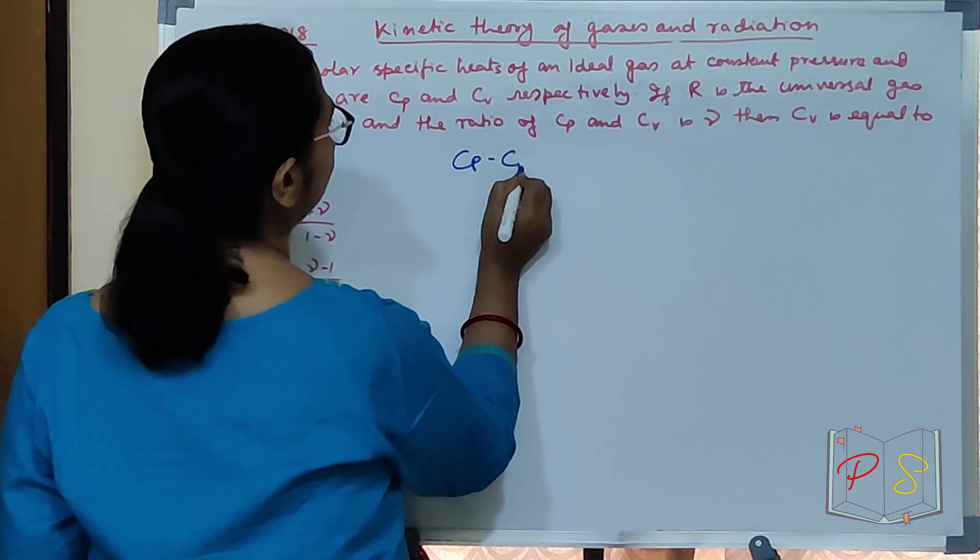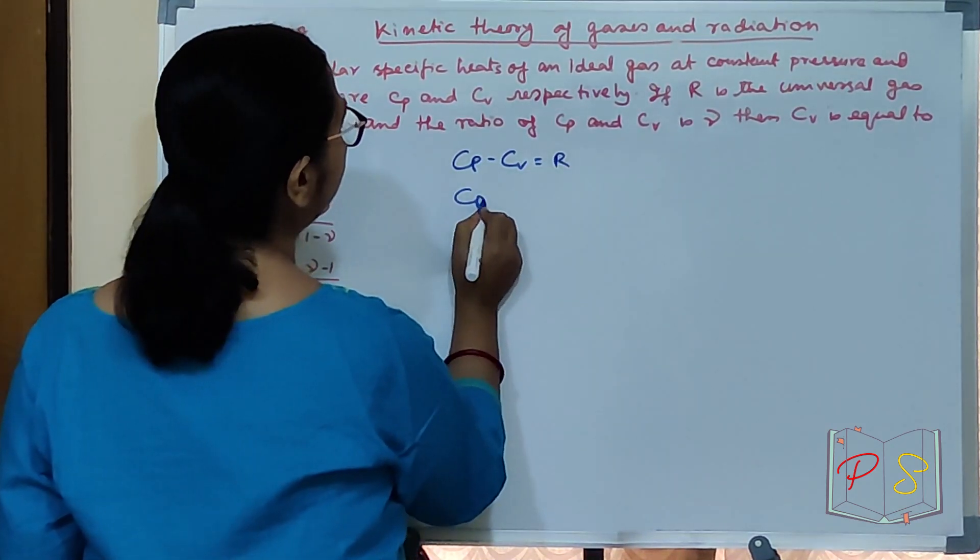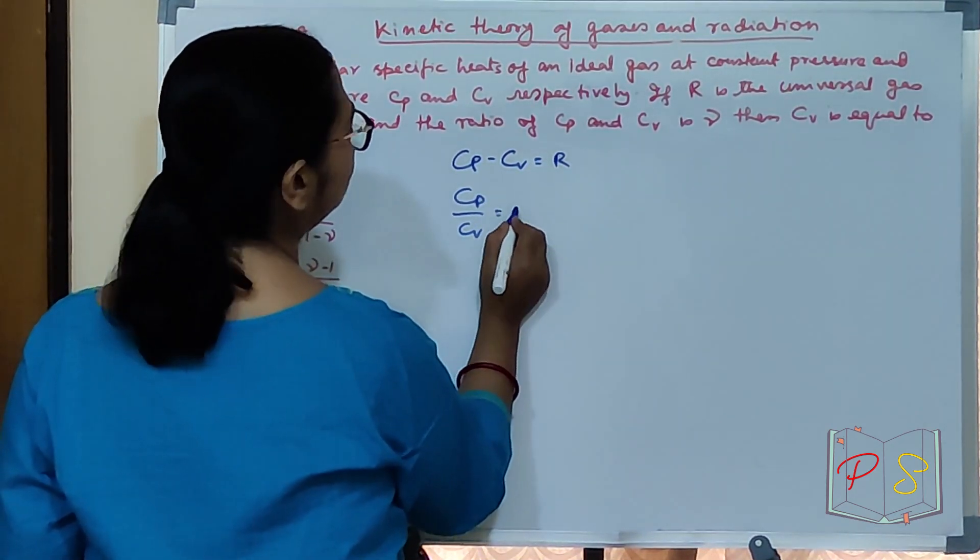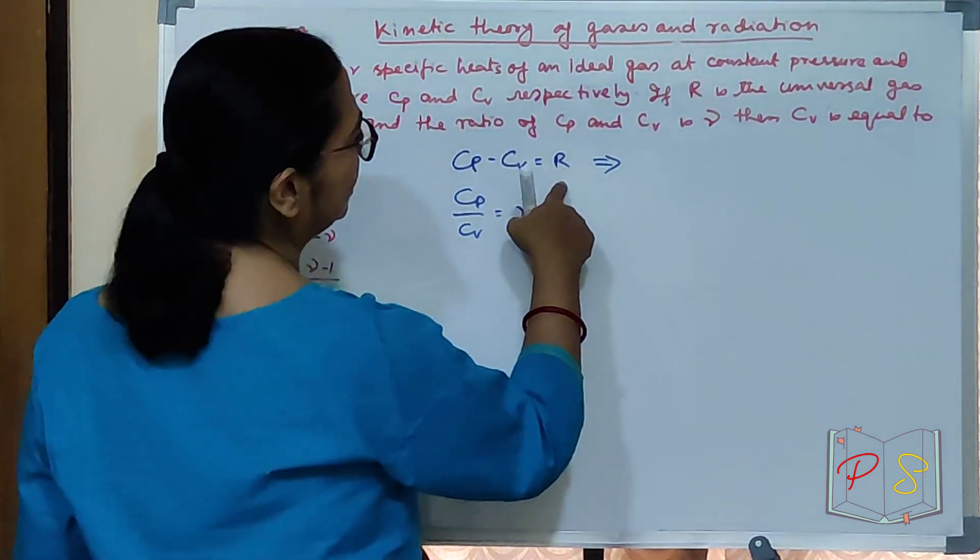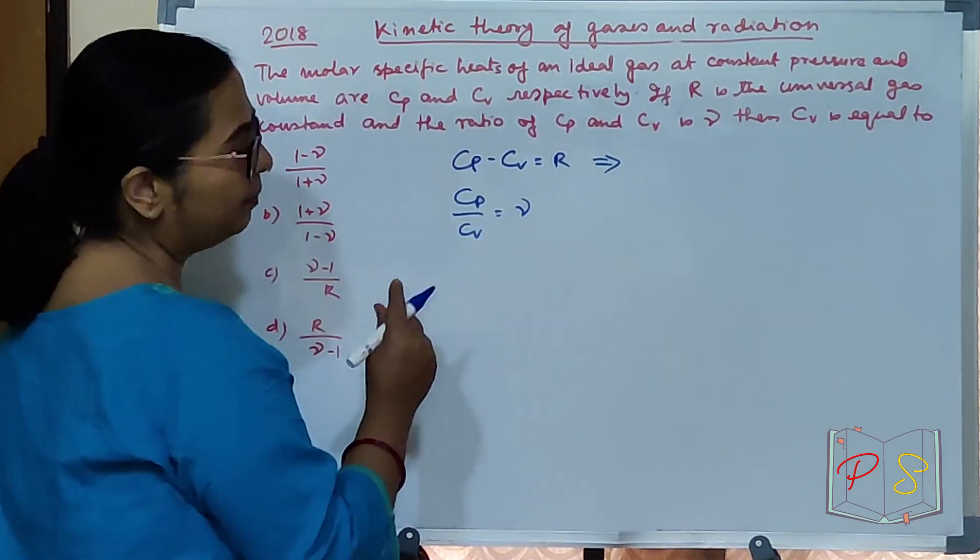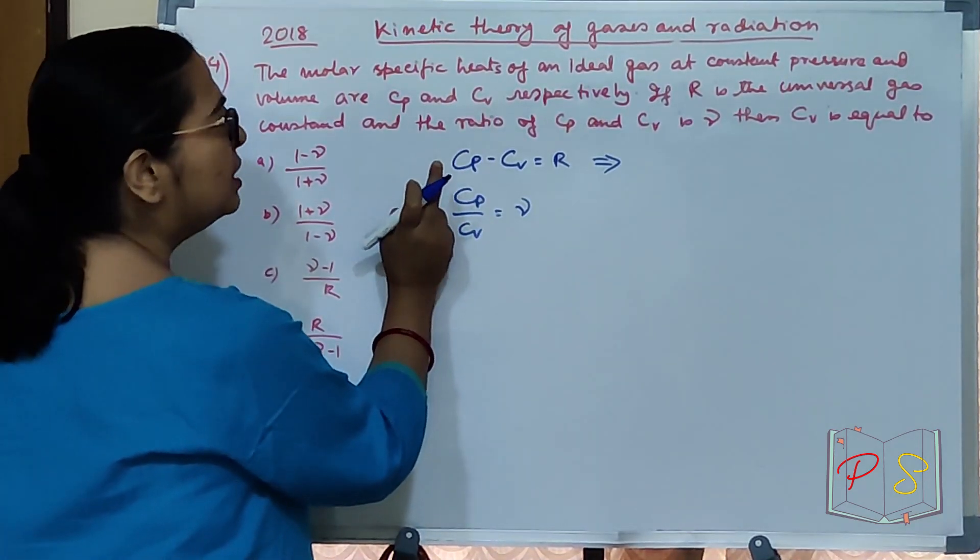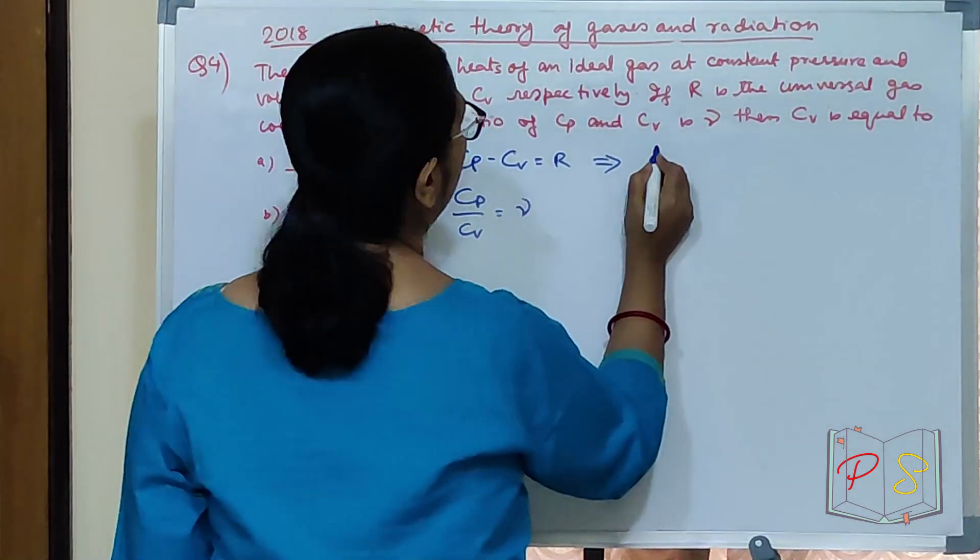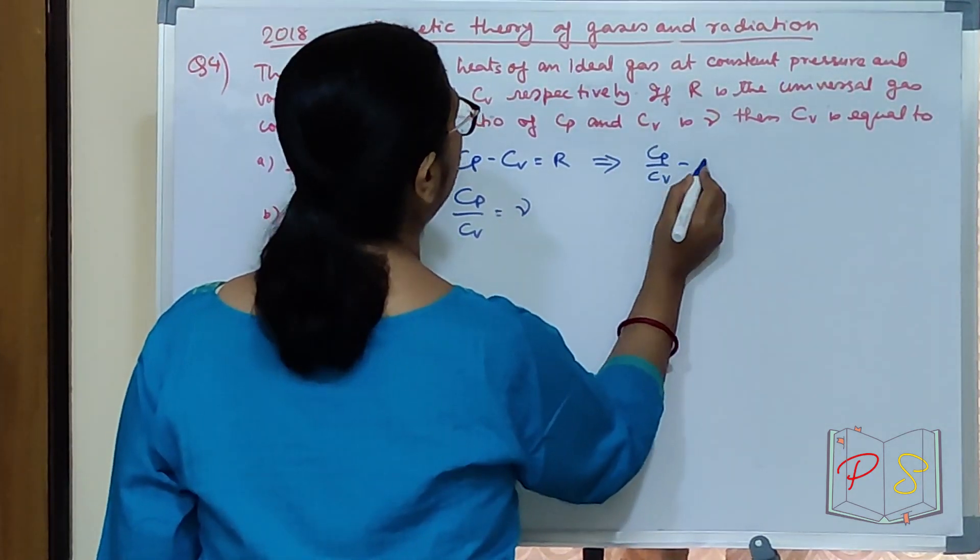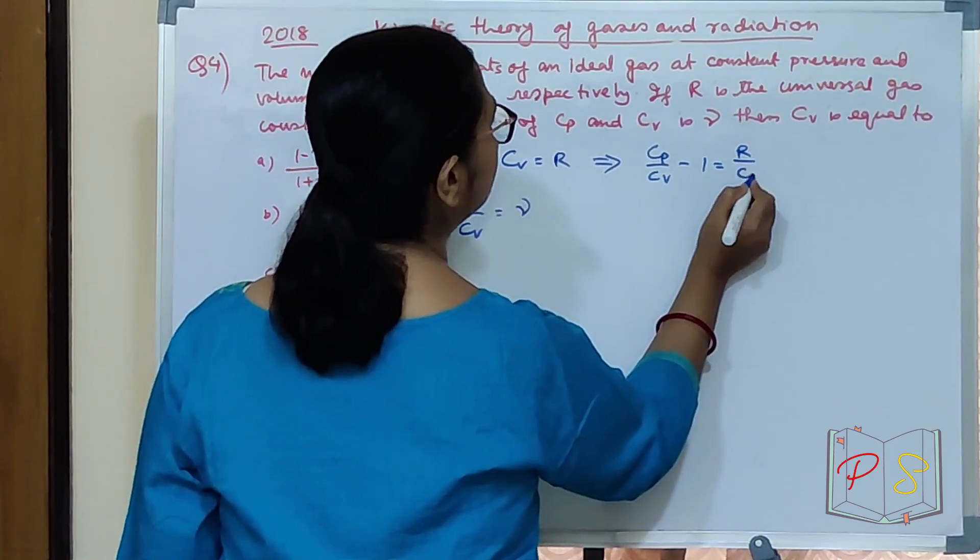If Cv comes out, it will get gamma times. So how do you divide it? Cp by Cv minus 1 equal to R by Cv.